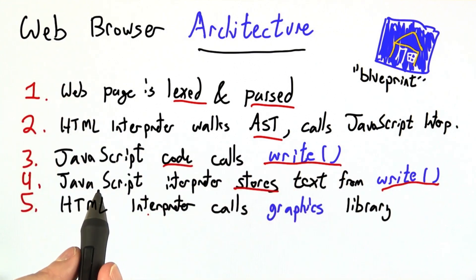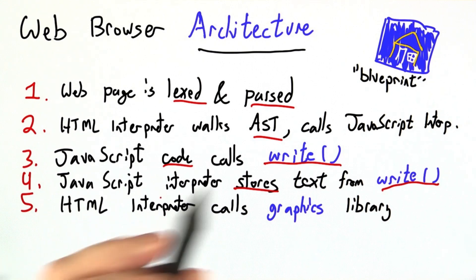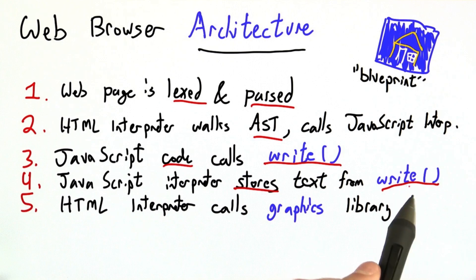Eventually, the JavaScript fragments will be done executing, and we'll be back to the HTML interpreter, which will have received all of those strings from write, and it will take them plus all of the normal HTML elements and call the graphics library to make a pretty picture of them.